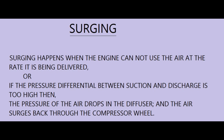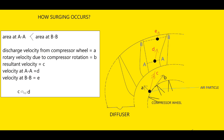Surging happens when the engine cannot use the air at the rate it is being delivered, or if the pressure differential between suction and discharge is too high. The pressure of the air drops in the diffuser, and then the air surges back through the compressor wheel. Consider an air particle in normal operation: air is discharged from the compressor wheel with a velocity A, and this combined with the rotary velocity B gives a resultant velocity and direction C, as shown in the figure.